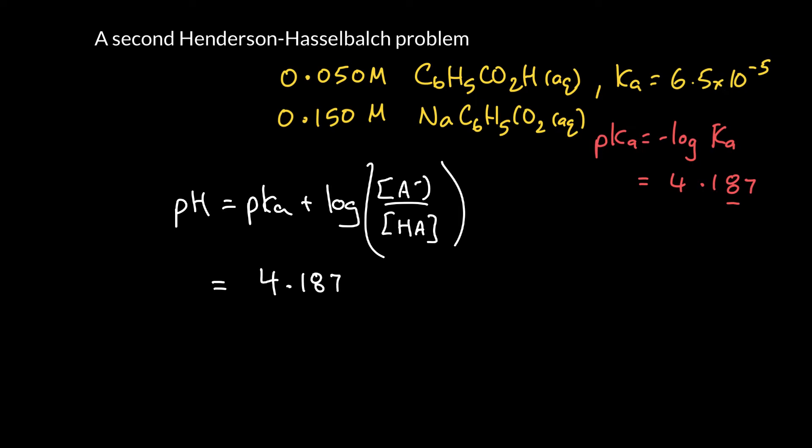So 4.187 plus the log of the base over the acid. So the base was 0.15 molar, and the acid is 0.05 molar. I should write units but they would cancel out. We can see that that ratio is 3. So the log of 3 is greater than 0, so it's going to raise the pH over the pKa. So it'll be 4.187 plus the log of 3, so that is plus 0.477.